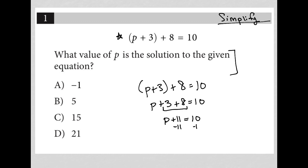And then, of course, subtracting 11 from both sides of the equation gets me to p equals negative 1. Therefore, the correct answer here is choice A.